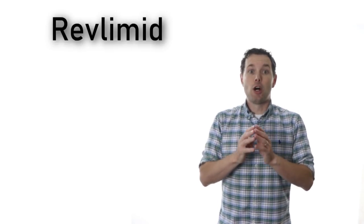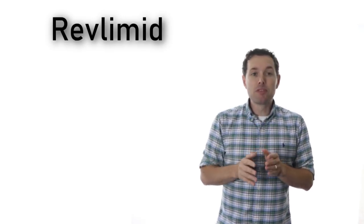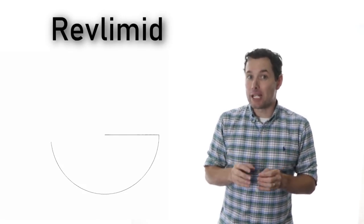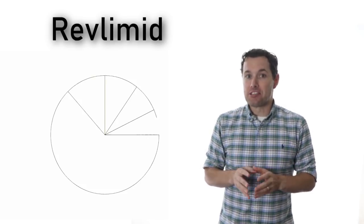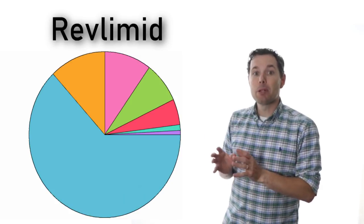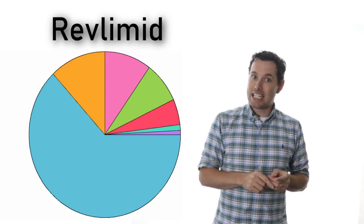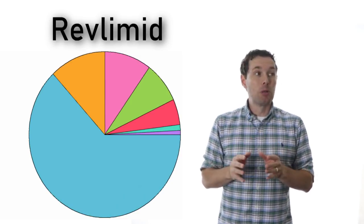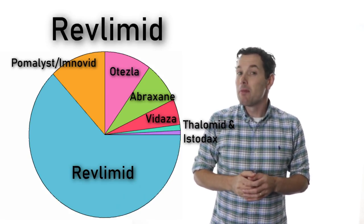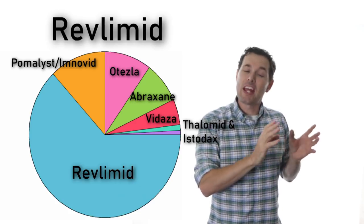To put this in perspective, Celgene had about 13 billion dollars in revenue during 2017. Revlimid accounted for almost 65% at just over 8 billion dollars.